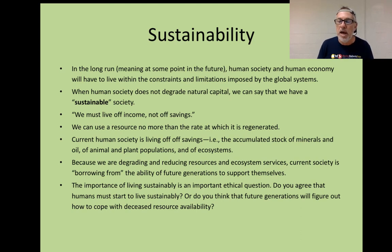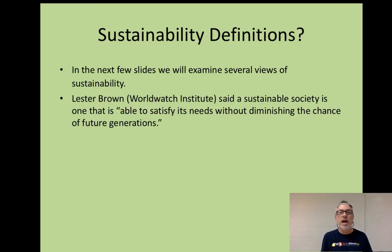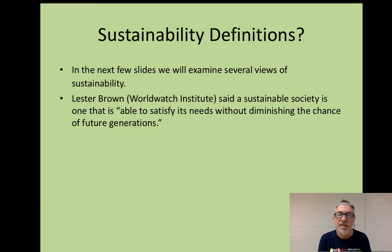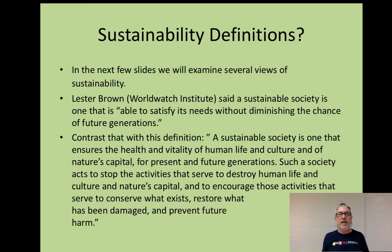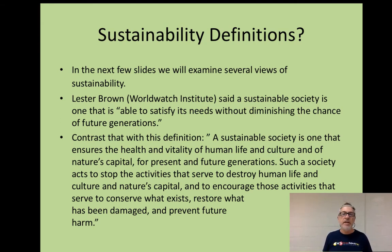I want to look now at the way various groups have tried to define sustainability. Lester Brown of the World Watch Institute said: a sustainable society is one that is able to satisfy its needs without diminishing the chance of future generations. That echoes a bunch of the sentiments we saw on the last slide, where we were defining sustainability by the rates of resource regeneration. Contrast that with this other definition: a sustainable society is one that ensures the health and vitality of human life and culture and of nature's capital for present and future generations.